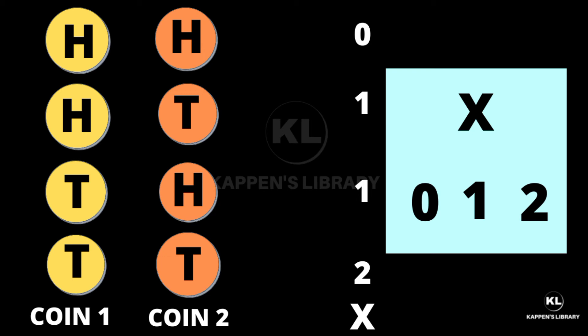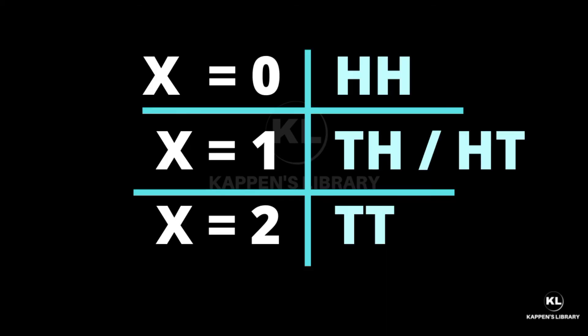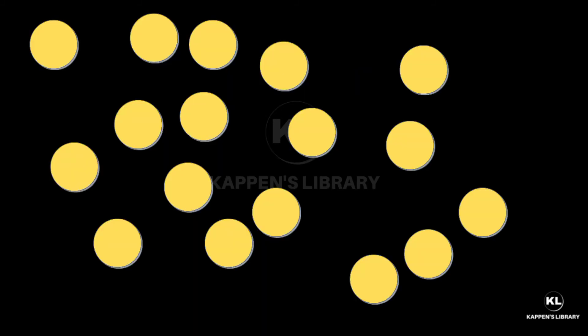When the sample point is TT, X is equal to 2. That is: X = 0 when sample point is HH; X = 1 when sample points are HT and TH; X = 2 when the sample point is TT.